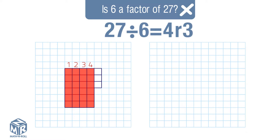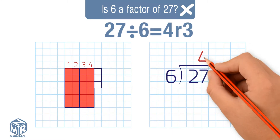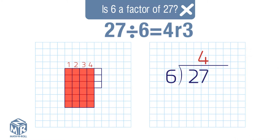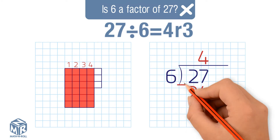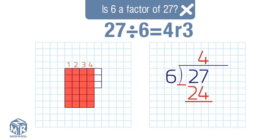6 is not a factor of 27. We can also solve using long division: 27 divided by 6. We put 4 at the top. 6 times 4 equals 24. 27 minus 24 equals 3, so the quotient is 4 with a remainder of 3. 6 is not a factor of 27.